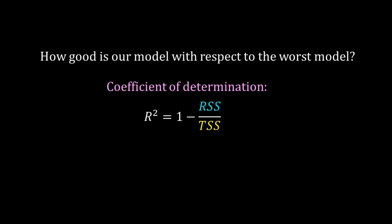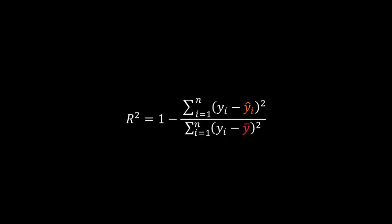Let me write R² showing all the terms explicitly. R² is equal to 1 minus summation of (yi - ŷi)² divided by summation of (yi - ȳ)².